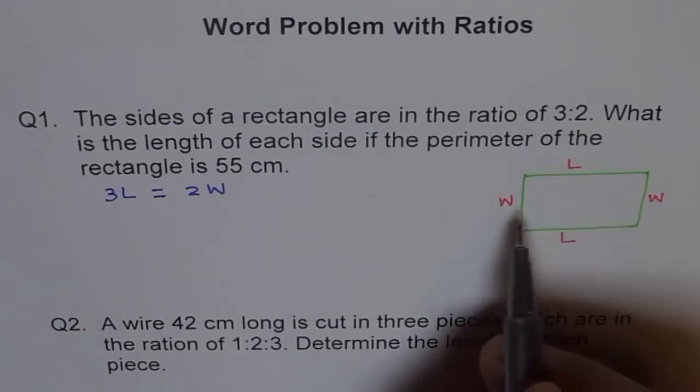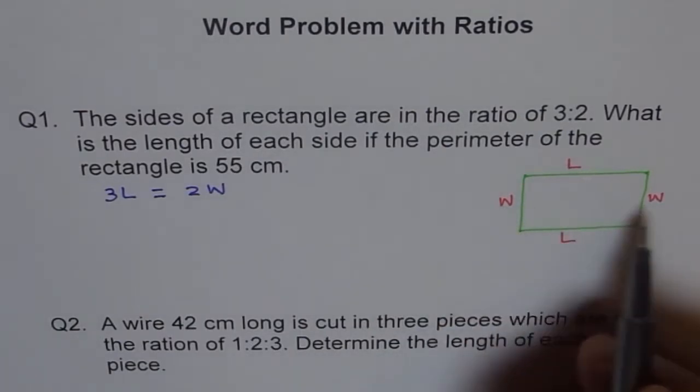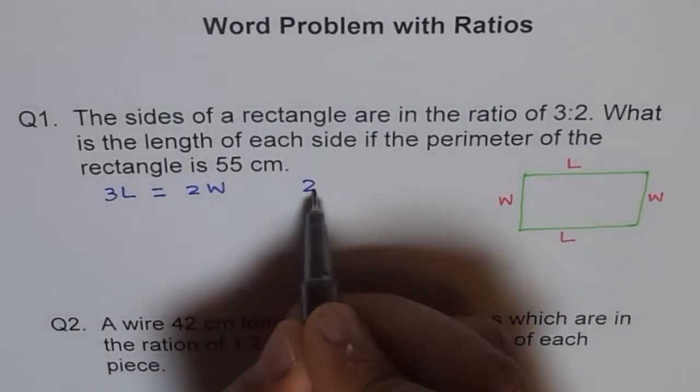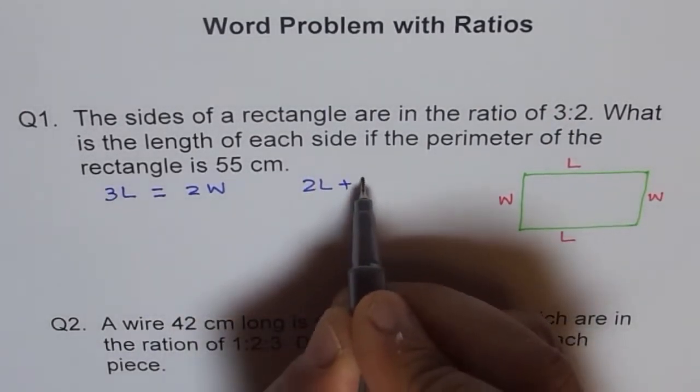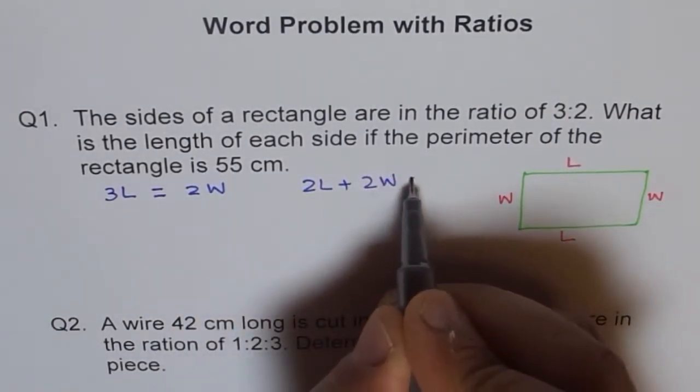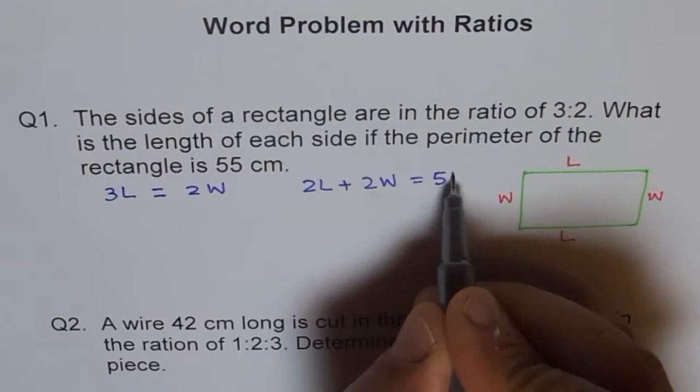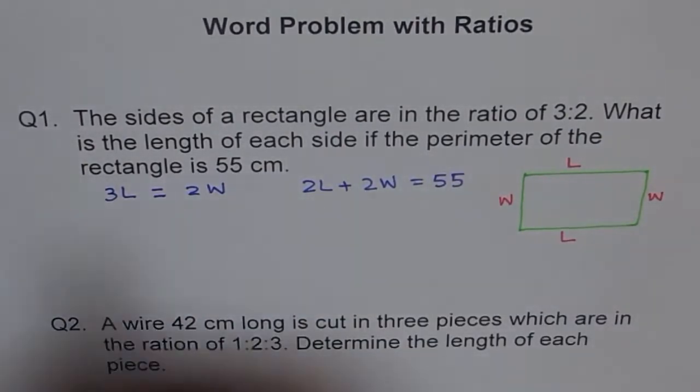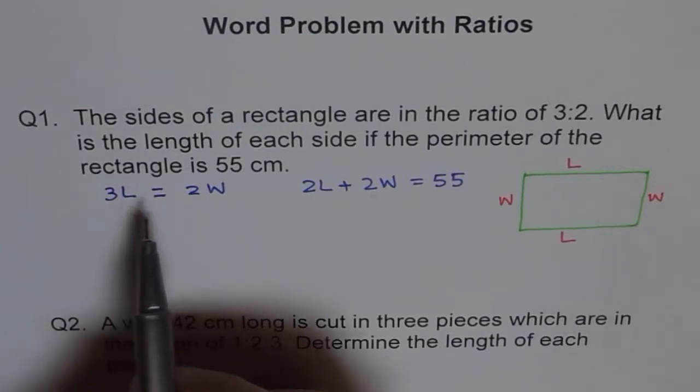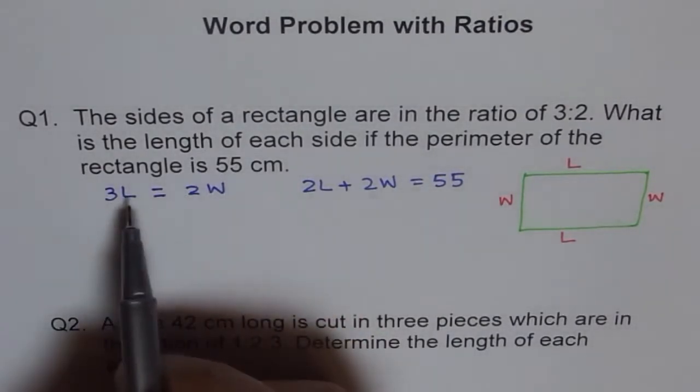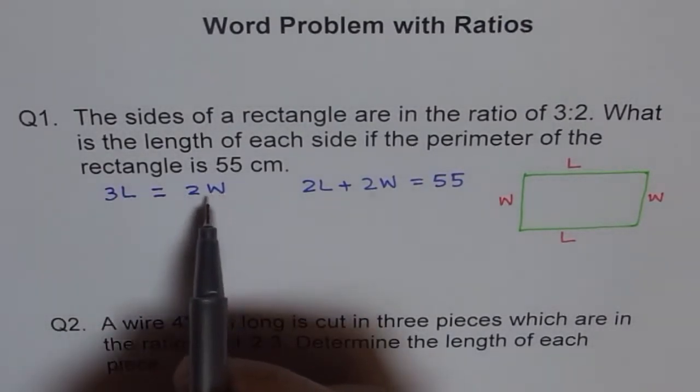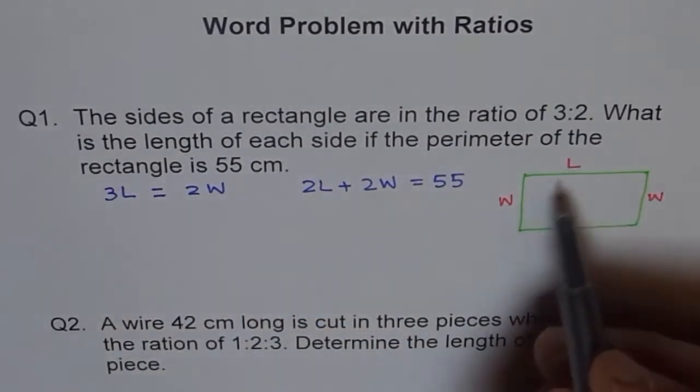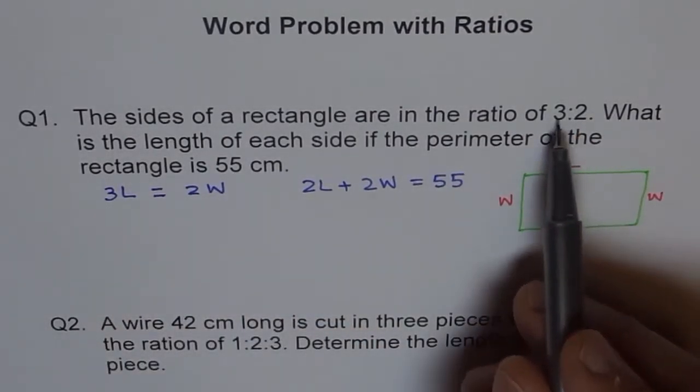So sum of all the sides means 2L plus 2W. We have 2 times length plus 2 times W equals to 55. When we write 3 times length equals to 2 times width, we are trying to say that width is longer. Actually speaking, so this diagram doesn't really represent it, but we went with this ratio.